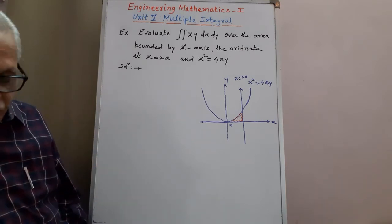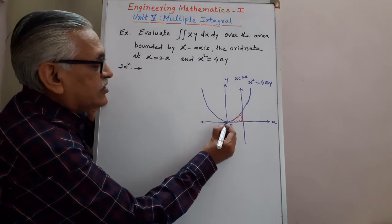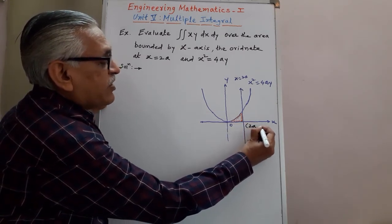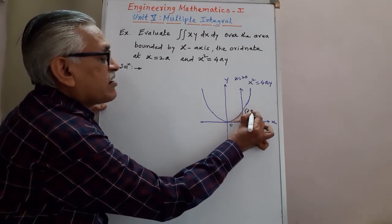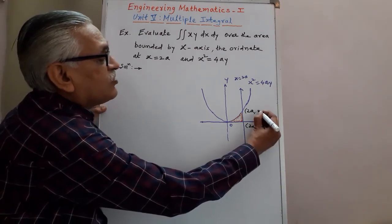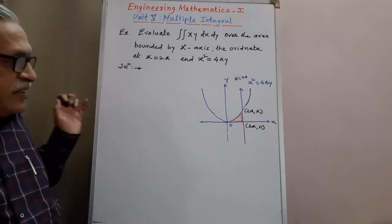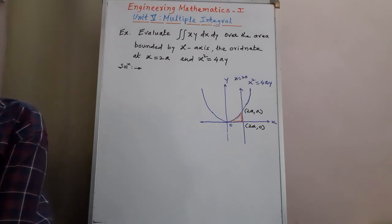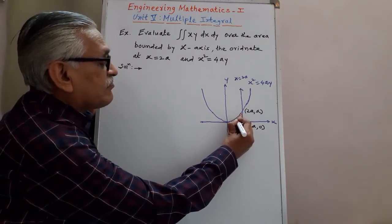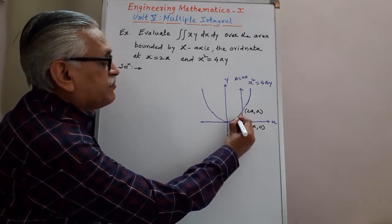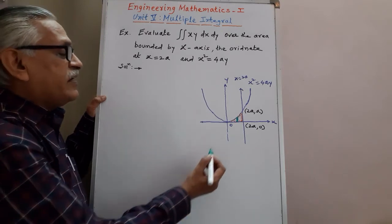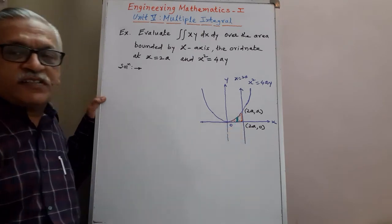This is the required region. The point of intersection: one is the origin, the second point is (2a, 0) — at x equals 2a, y coordinate is 0 — and solving the parabola for y gives x squared by 4a, so the third intersection is (2a, a). We make a strip parallel to the y-axis, whose lower end is on the x-axis and upper end is on the curve x squared equals 4ay.